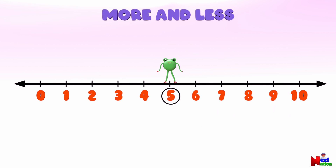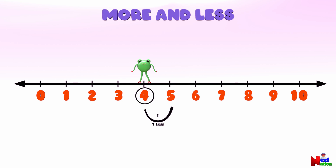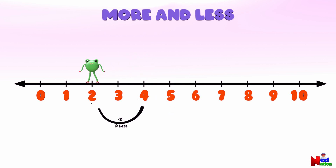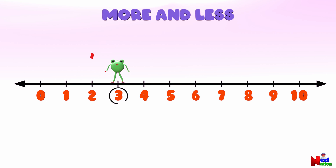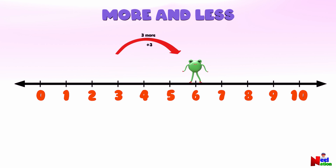Now let's do a fun activity — let's make Mr. Luthu do a couple of jumps. Mr. Luthu is now on number five. Hey Mr. Luthu, can you find the number one less than five? Number four — you got it! Now, two less than number four? Number two — perfect! What is one more than number three? Four, you got it. Here comes the tricky one: what is three more than number three? Number six — awesome, good job!